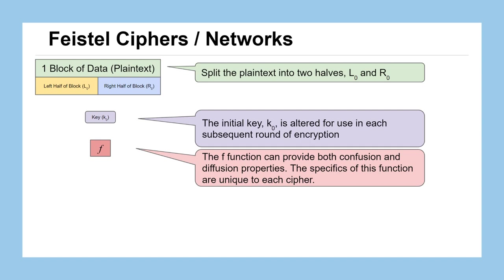The specifics of how the F function works are unique to each cipher type — DES might have a different series of operations than AES, Twofish, or others. It's a general placeholder for the part of the round that provides confusion and diffusion, or more mathematically, substitution and transposition. We take our right half of the block and the key as the two inputs to the F function, and it outputs some information. We then XOR that output with the left half of the block, which so far hasn't been touched. The output of F must be the same size as half of our plaintext — so if the plaintext is 16 characters, the output of F should be 8 characters.